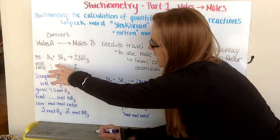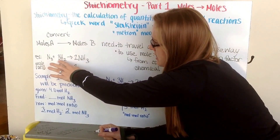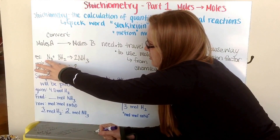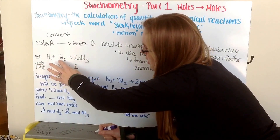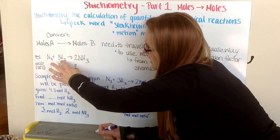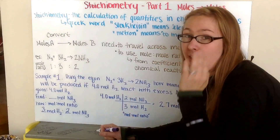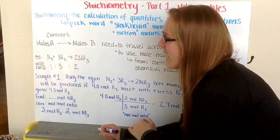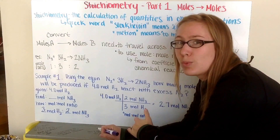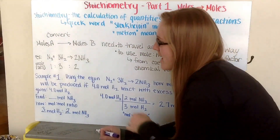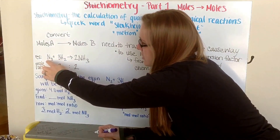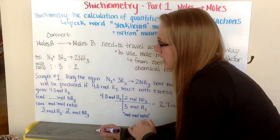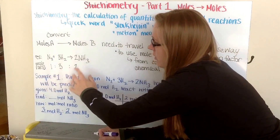For example, take the reaction N2 plus H2 yields NH3. To balance it, we need two nitrogens on each side. Three times two gives six hydrogens on the left, and two times three gives six hydrogens on the right. The coefficients — one, three, and two — tell you how many moles of each substance are needed for a balanced reaction, based on the law of conservation of mass. So my mole ratio is: one mole of N2 for every three moles of H2, reacting to give two moles of NH3. These coefficients give your mole ratio.